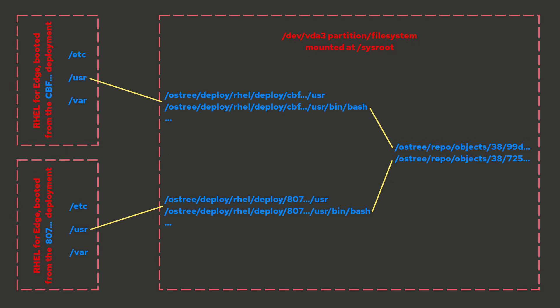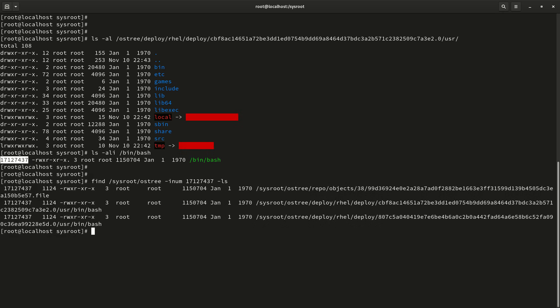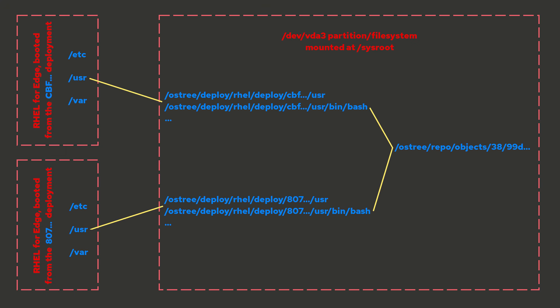Let's validate this by looking at the slash user slash bin slash bash inode number, which ends in the numbers 437. I'll do a search on the slash sysroot slash os-tree directory for this inode number and we'll find three files that share the same inode number. There is the file under the slash sysroot slash os-tree slash repo directory — in our logical representation this is the main source file for the particular version of bash that both deployments are using. In this example, both deployments point to the same file under sysroot os-tree repo because both deployments are using the exact same version of bash. If bash had been upgraded to a newer version in the 807 image, there would be an additional file in the slash sysroot os-tree repo directory and bash in the 807 image would have a hard link logically pointing to that newer version in the repo directory. Thanks a lot for watching the video and I hope you have a great rest of your day.